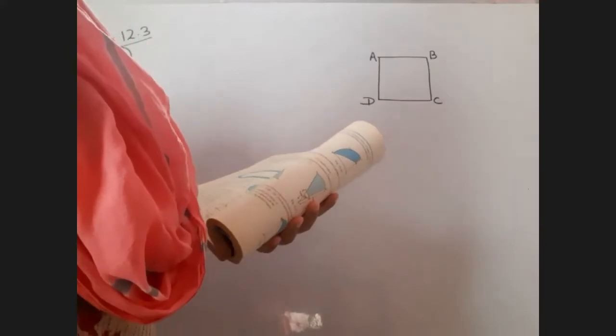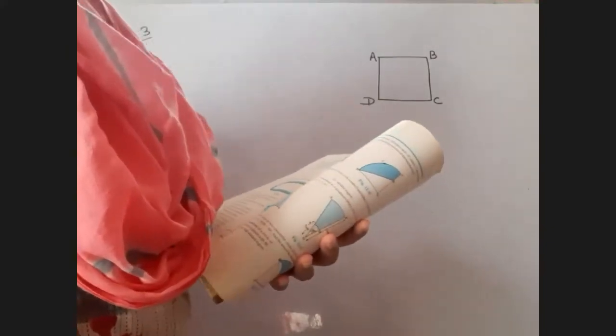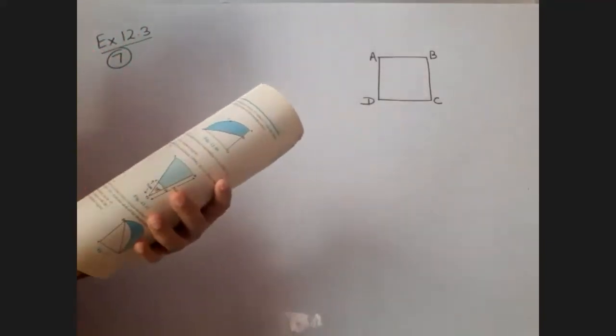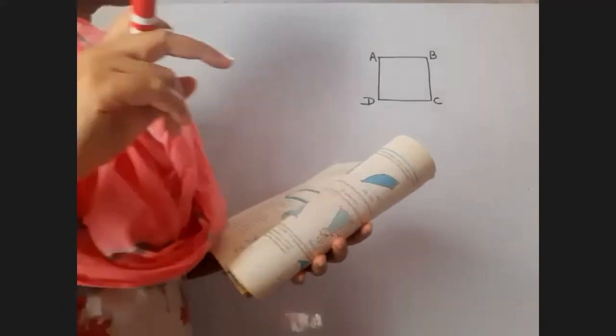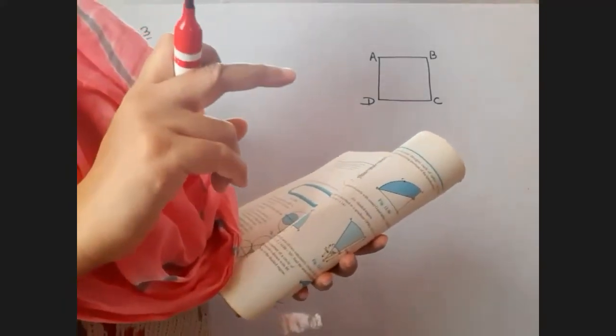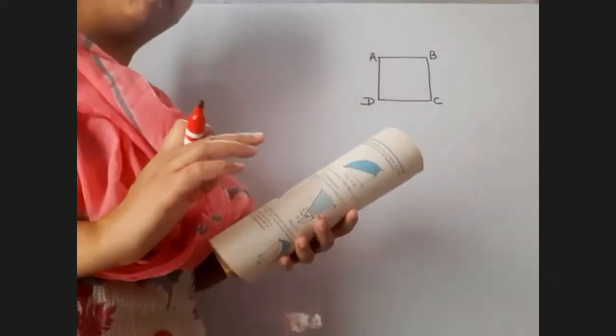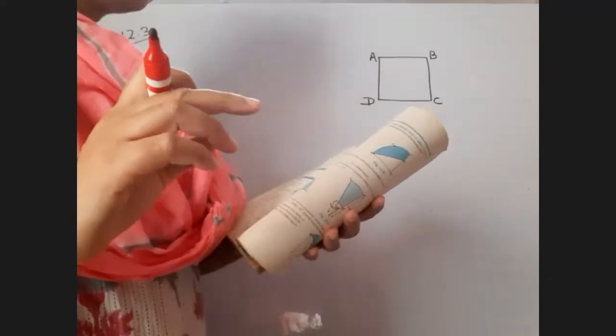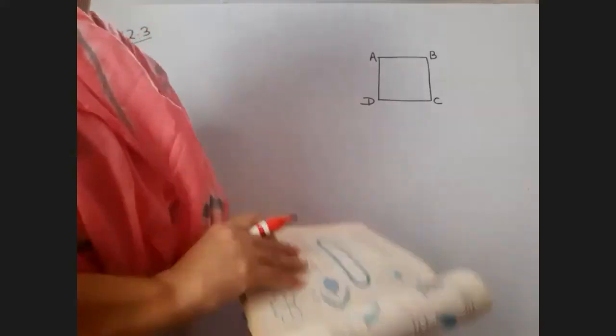Further, we are given with centers ABCD, four circles are drawn such that each circle touches externally two of the remaining. Touching externally means there is no overlapping. Two of the remaining three circles. Find the area of the shaded region.